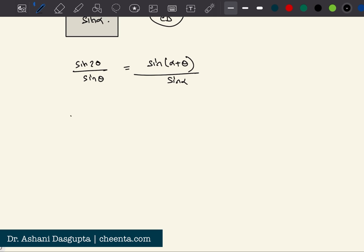So sine two theta becomes two sine theta cos theta by sine theta, and this is sine alpha cos theta plus cos alpha sine theta by sine alpha. So I can cancel off sine theta and I can cross multiply.